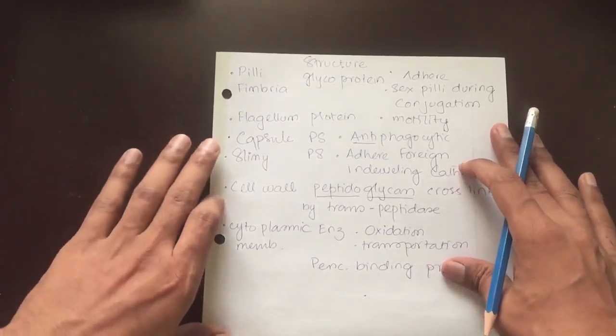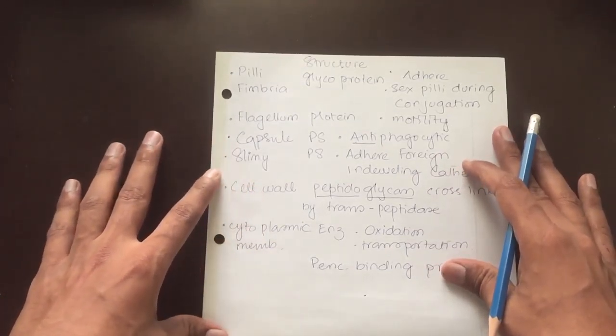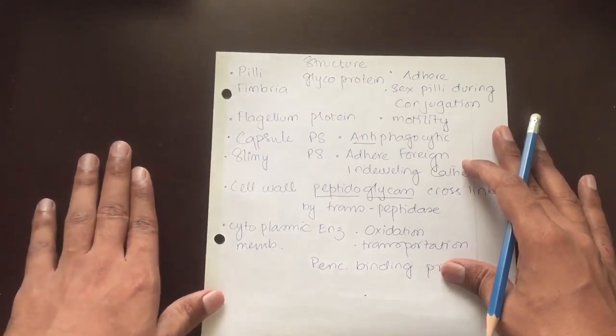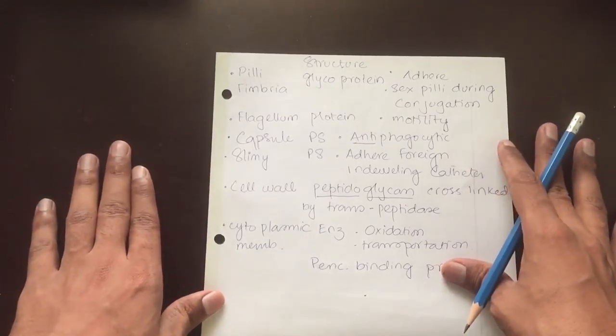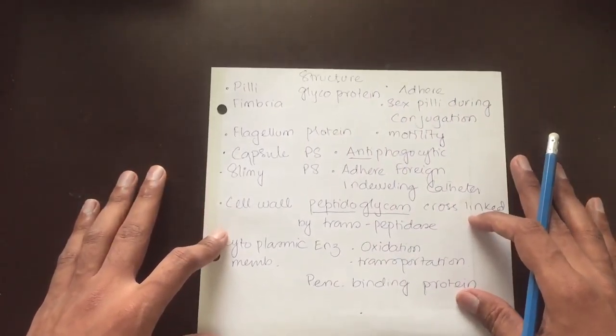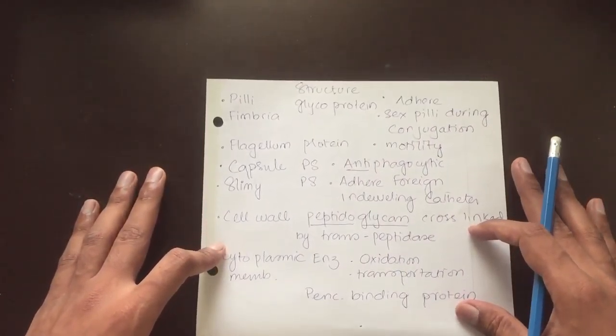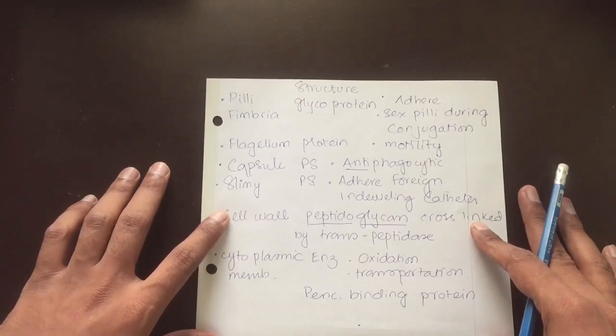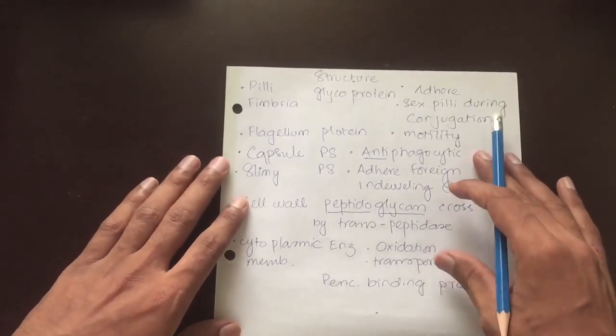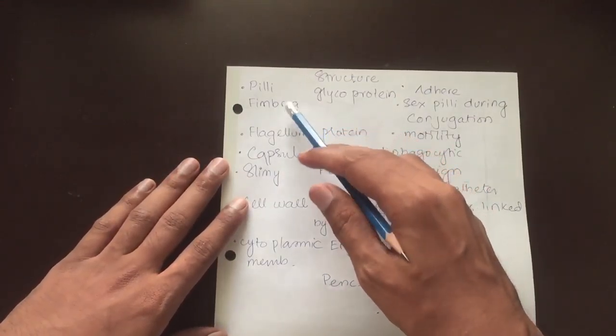In this section, we will discuss the general structure which are similar in both gram-positive and gram-negative bacteria. Then we will separately discuss the special features of gram-positive and gram-negative bacteria, and then related endo and exotoxins. The first structure is the cellular appendages.